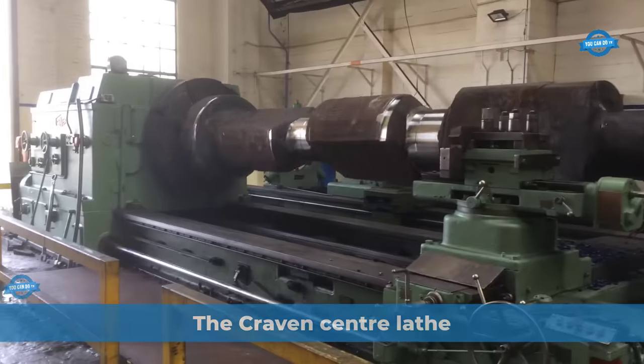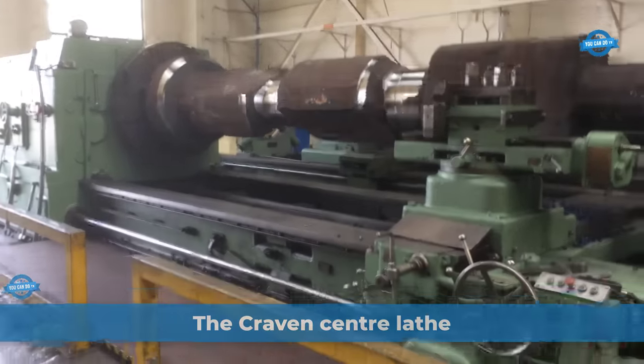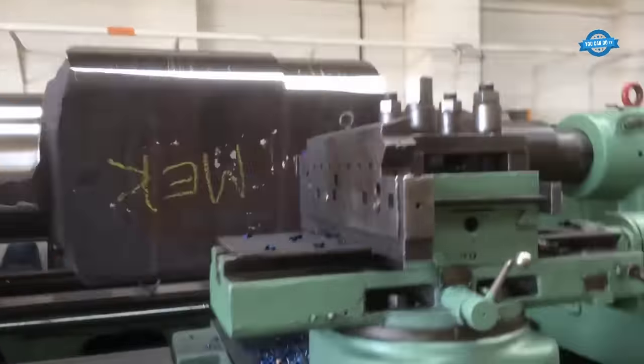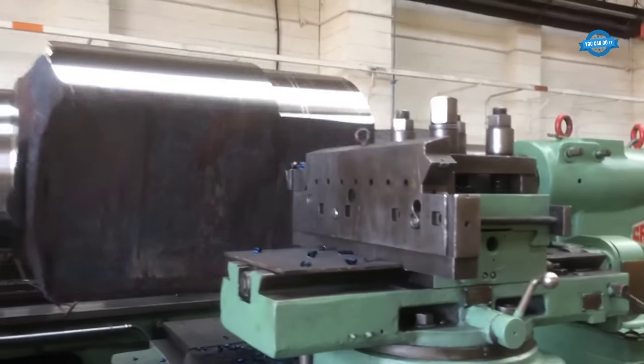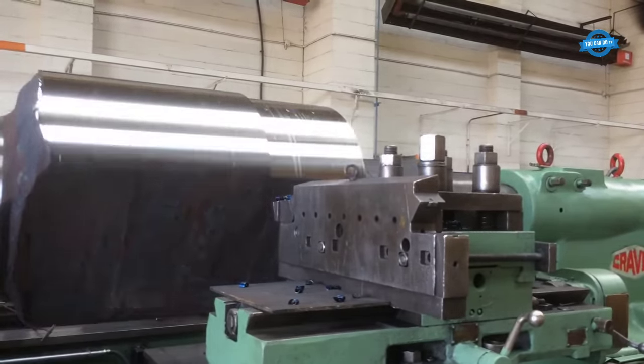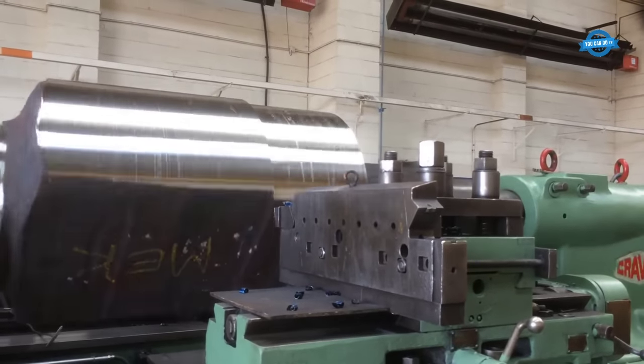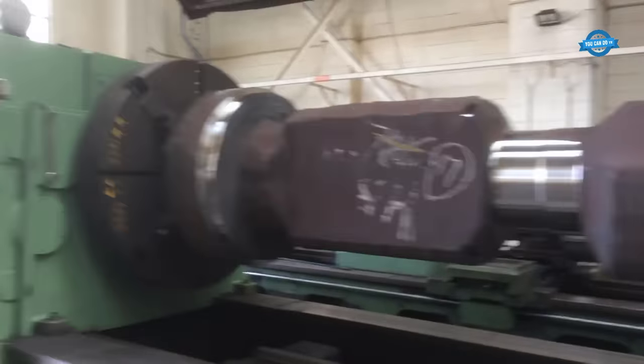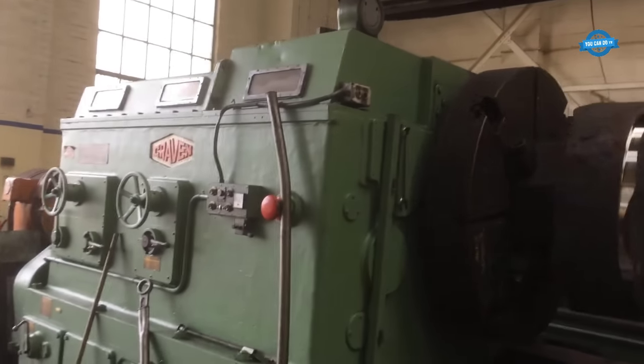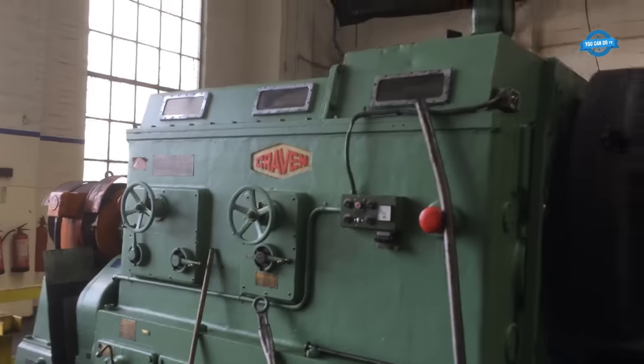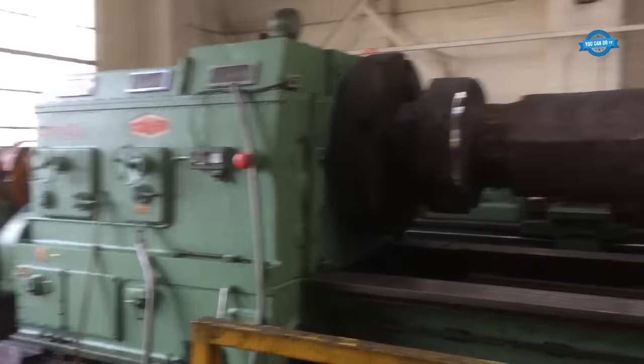The Craven Center lathe operates through a systematic process to manufacture 5-meter crankshafts. First, the forged material is securely fixed on the lathe's headstock. As the lathe's spindle rotates, the cutting tool is brought into contact with the workpiece, gradually shaping it to the desired dimensions. The lathe's powerful headstock withstands the intermittent cutting, ensuring precise results. Additionally, milling and grinding processes further refine the crankshaft's surface and dimensions.